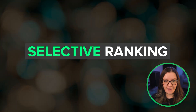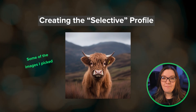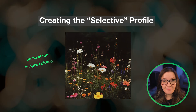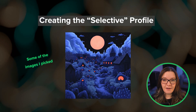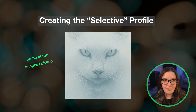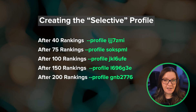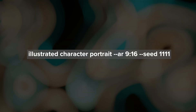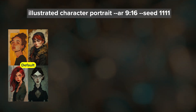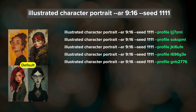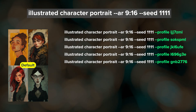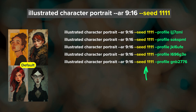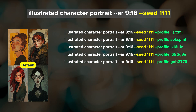Let's start with the selective profile. It took me many hours to get to 200 ranked image pairs. I was extremely selective, maybe picking one image out of every 50 to 75 or so image pairs. I saved five personalization codes to represent different stages in the ranking process, then ran a simple prompt — first without any personalization, then with each of the five personalization codes. I used the same seed number across prompts to isolate how the personalization code affects the results.